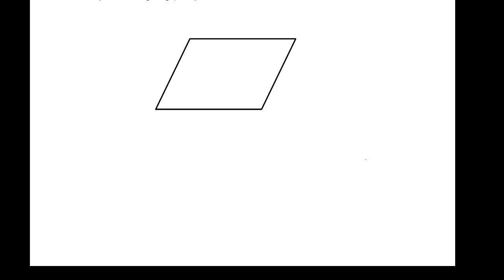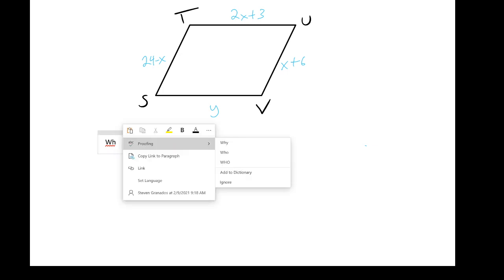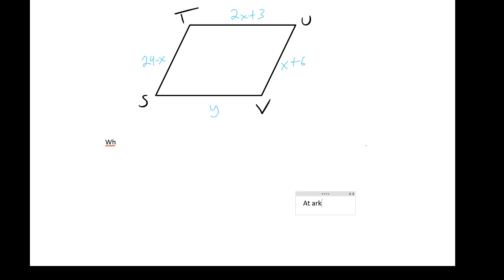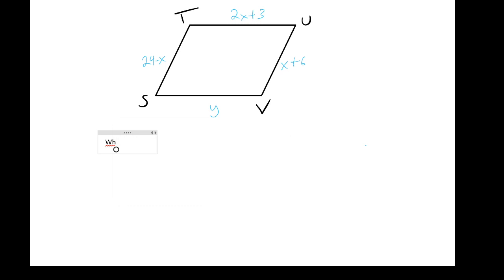Let's take a parallelogram S, T, U, and V with the following dimensions: 24 minus x, x plus 6, x, 2x plus 3, and y. The question is: what are the values of x and y that make STUV a parallelogram?